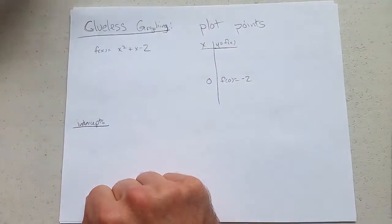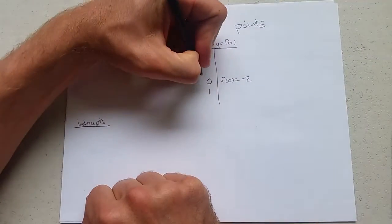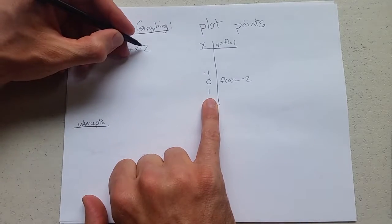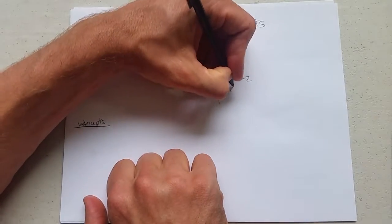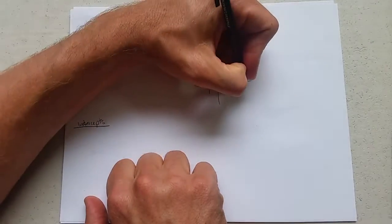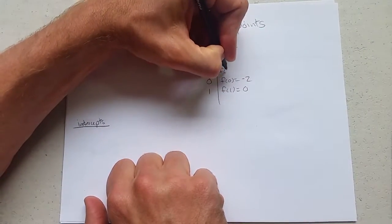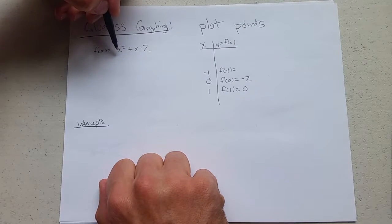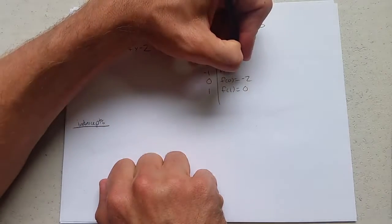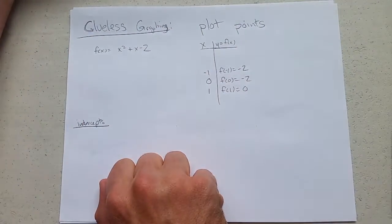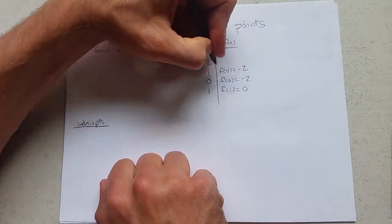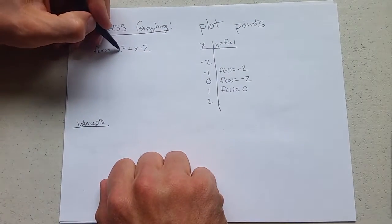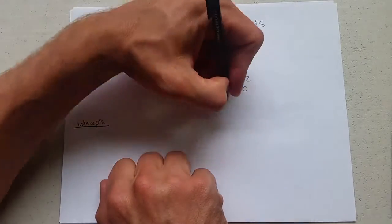We'll go with 1 and minus 1 next. We'll go positive 1 first: 1 plus 1 minus 2, we get 0. f of negative 1: negative 1 squared is 1 minus 1, that's going to cancel, and we get negative 2 here as well. We'll go negative 2 and positive 2. Plug in positive 2, we get 4 plus 2 is 6 minus 2 is 4.